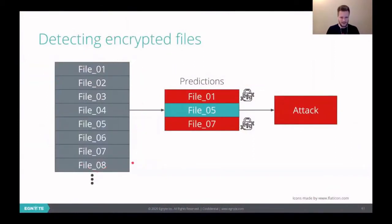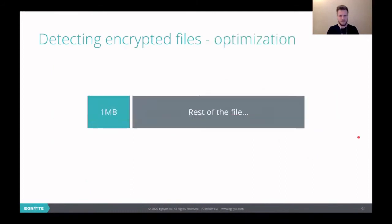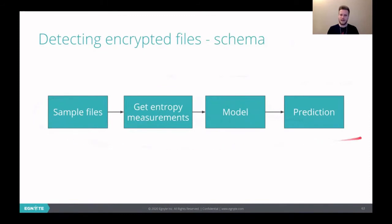So here are some user files. We will sample some files from them and check with our model if they are encrypted. If most of them is, then we raise an attack. Otherwise, we don't raise an attack. It's okay because files are not getting encrypted. And the other thing we did is we took only first megabyte of file and ignored the rest of that. Because we made some experiments and one megabyte is enough to determine if the file is encrypted or not. So this is how our detecting encrypted files looks like. First, we sample some files. Then we calculate those entropy measurements. We go with them to the XGBoost model and have a prediction are the files encrypted or not.